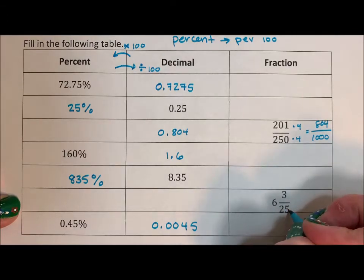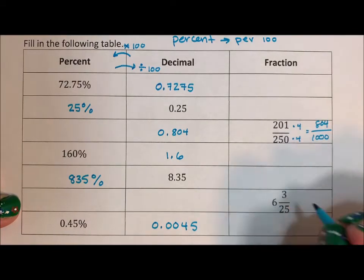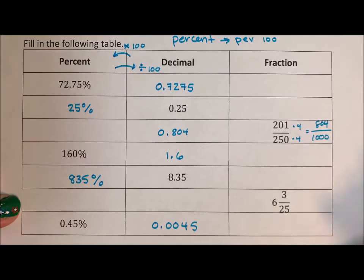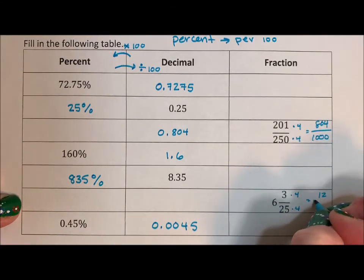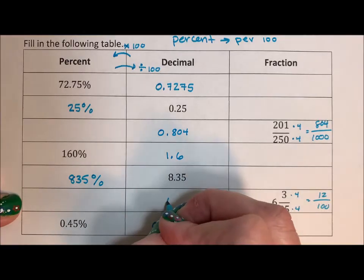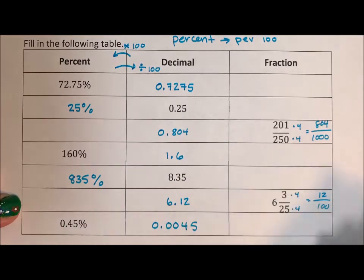Here, we could do the same thing. 25 goes, there's four quarters in 100, in a dollar. So we multiply top and bottom by 4 to get 12 over 100 to get 6.12. Or we could throw it into a calculator if you are using one. Depends on how you're being allowed to do this.